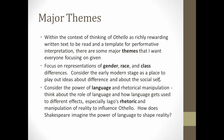In addition to what we talked about last week, within the context of thinking of Othello as a richly rewarding written text and a template for performative interpretation, there are some major themes I want everyone focusing on. Focus on representations of gender, race, and class differences. Consider the early modern stage as a place to play out ideas about difference and the social self. Consider the power of language and rhetorical manipulation — think about how language gets used to different effects, especially Iago's rhetoric and manipulation of reality to influence Othello. How does Shakespeare imagine the power of language to shape reality?